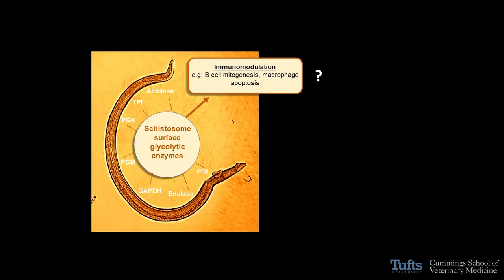When it comes to immunomodulation, there are several independent studies suggesting that some of these glycolytic enzymes can engage in processes such as B-cell mitogenesis, neutrophil apoptosis, and macrophage apoptosis. We can speculate that for schistosomes, some of these proteins are engaged in like-minded activities which could immunomodulate and therefore promote the survival of these worms inside the vasculature.